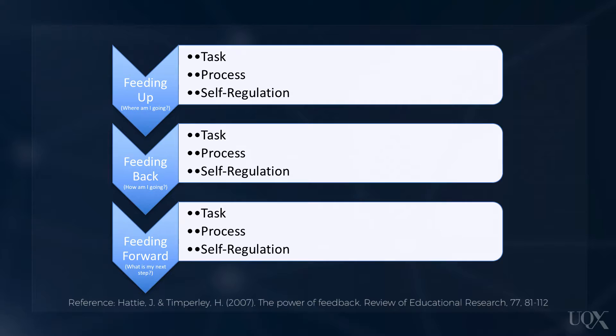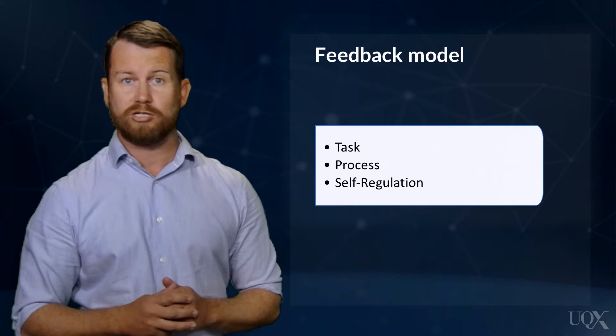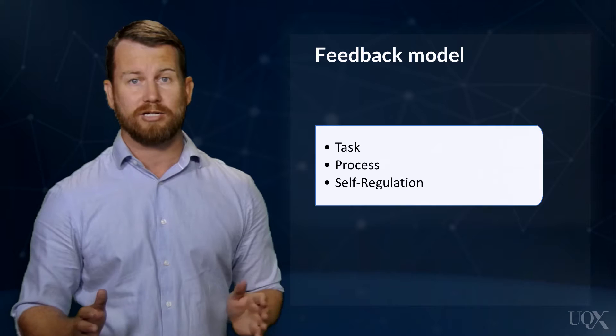Through the addition of feedback levels, Hattie and Timperley's feedback model facilitates the targeting of differentiated, specific feedback to individual learners, dependent upon their learning needs. Task-level feedback is focused upon the learning intent and the specific requirements of the task — this feedback level is best suited to novice learners. Process-level feedback is aimed at the processes, skills, strategies and thinking required by the learner to complete the task.